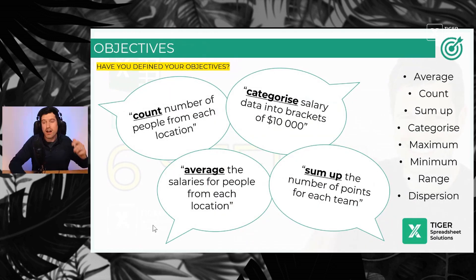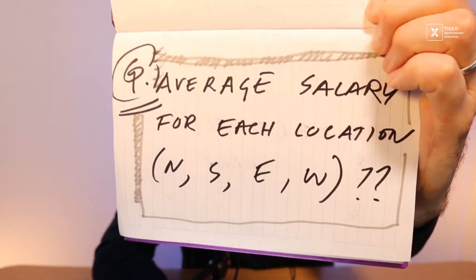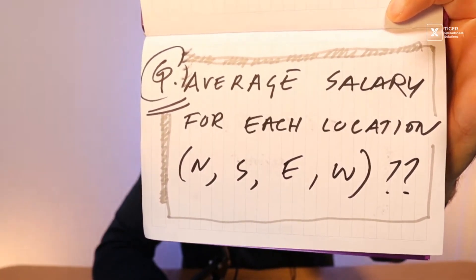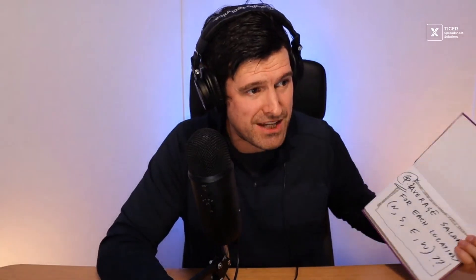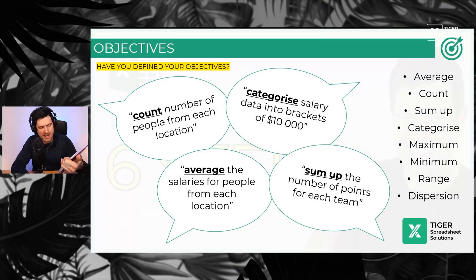Objectives. Are you taking the time to write down your objectives? I recommend using pen and paper. I've written down my objectives here. Now, do these objectives make sense to you? If not, you haven't downloaded the download file because it's all about salary information. I've written down what I'm trying to do. I'm trying to get average salary for each location. What do you want to do?